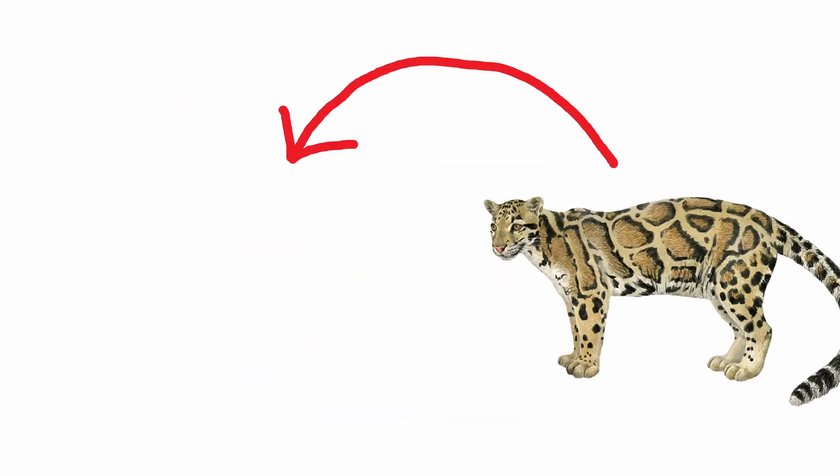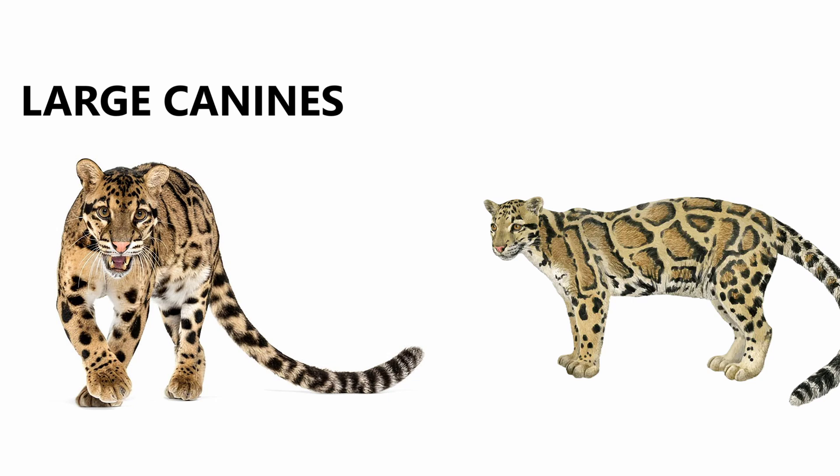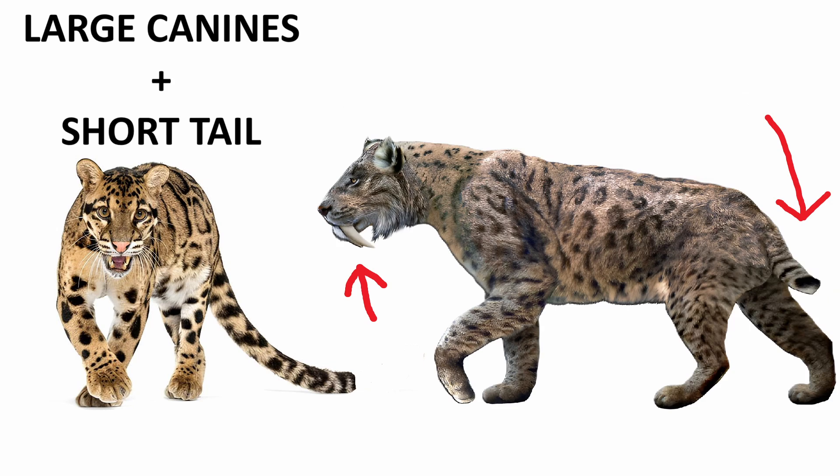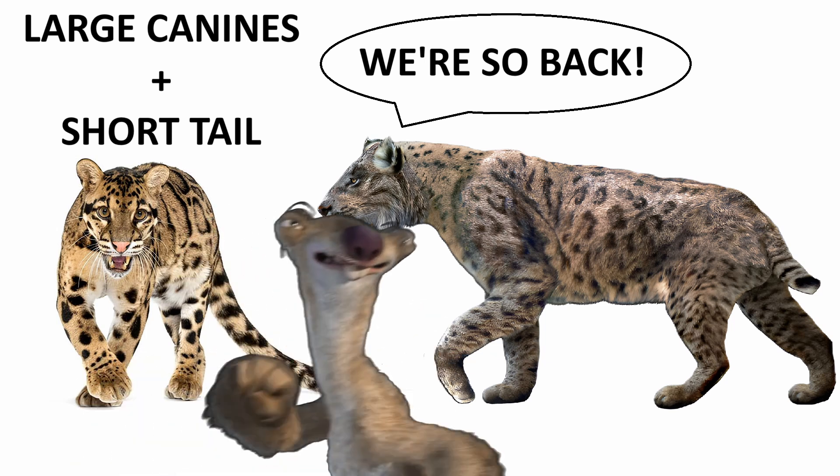Now let's talk about another de-extinction method, backbreeding. This is a method where we selectively breed animals to bring back traits of their wild ancestors. By choosing animals that still have those ancestral traits, we can recreate appearances and behaviors of extinct animals.